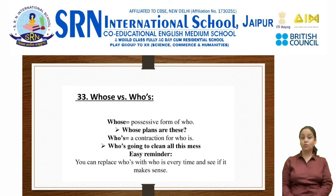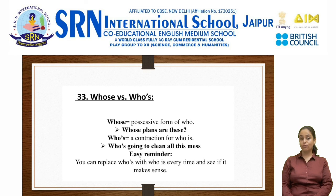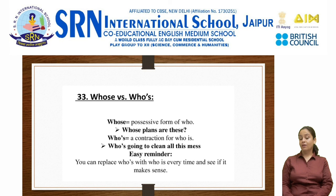Whose versus who's. Whose is the possessive form of who. For example: whose plans are these? Who's (with an apostrophe) is a contraction for who is. For example: who's going to clean all this mess? An easy reminder: you can replace who's with who is every time and see if it makes sense. Remember, who's with an apostrophe means who is.